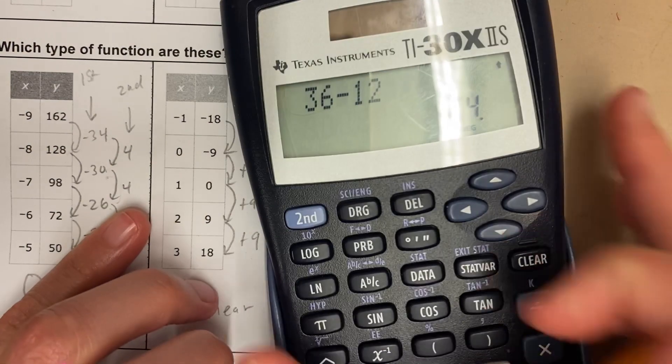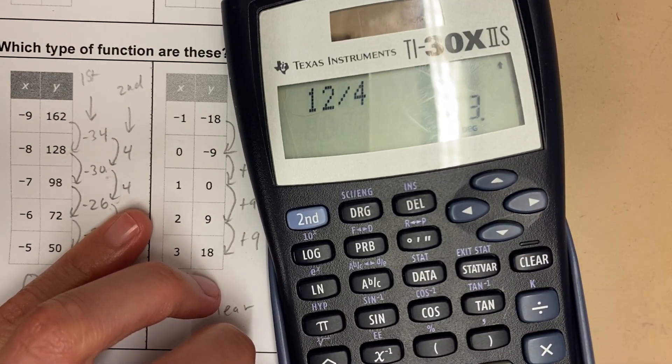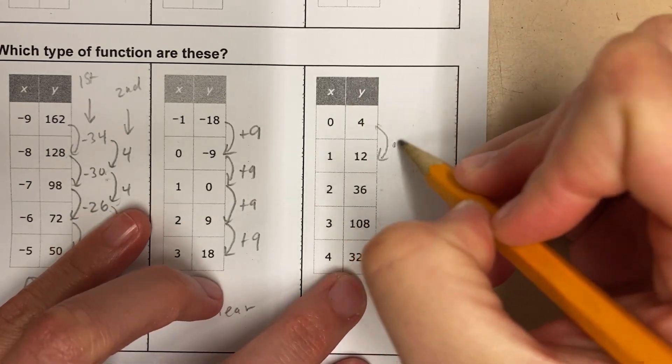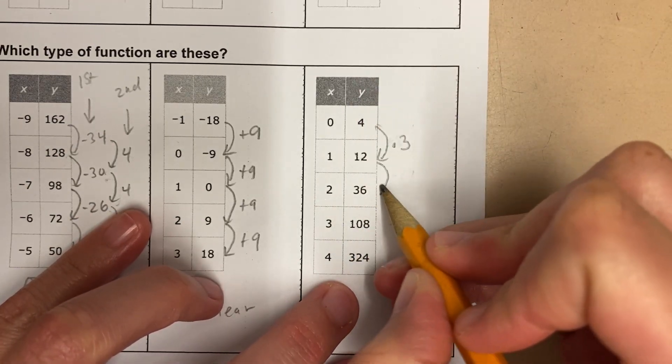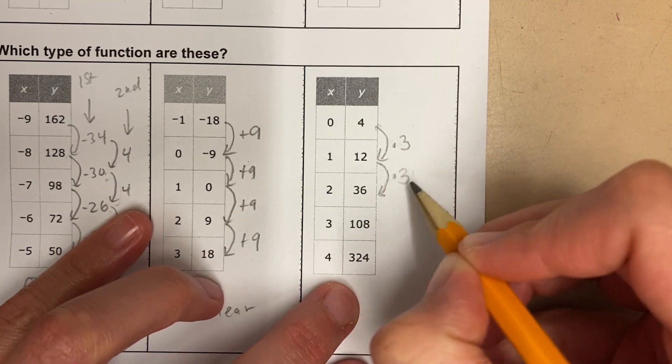4 times what is 12? If you don't know, 12 divided by 4 is 3, so that means 4 times 3 is 12. Let's see, does the multiplying by 3, does that pattern hold? Is 12 times 3, 36? You can put it in a calculator if you need. It is. Is 36 times 3, 108? Sure is.